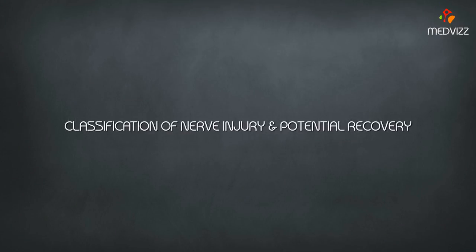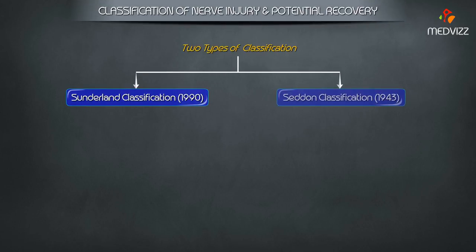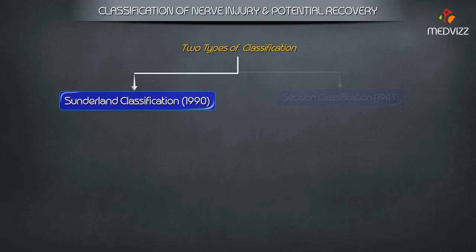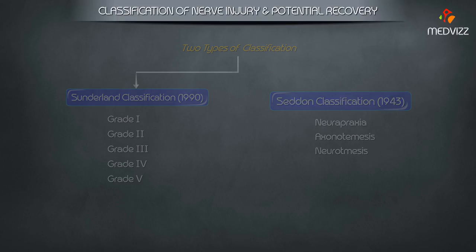Classification of nerve injury and potential recovery involves two types of classification systems. The Sunderland Classification from 1990 has five grades of nerve injury. The Seddon Classification from 1943 classifies nerve injuries as Neuropraxia, Axonotmesis, and Neurotmesis.